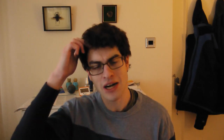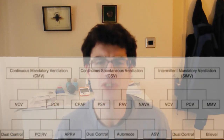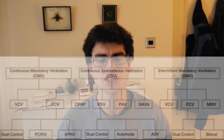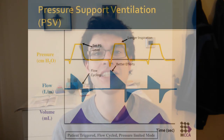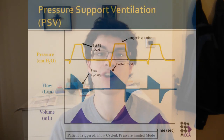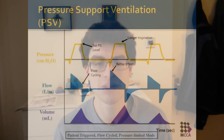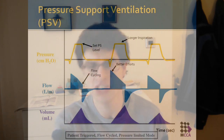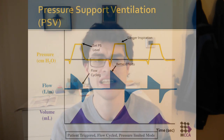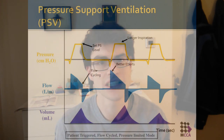Modes of ventilation: every brand of ventilator seems to have its own way of describing things, but there are some constants. First, PSV — Pressure Support Ventilation. This is where you let the patient drive their own respiratory rate; you let them breathe for themselves but help them along by pushing some air into their lungs every time the machine detects that they're trying to breathe.